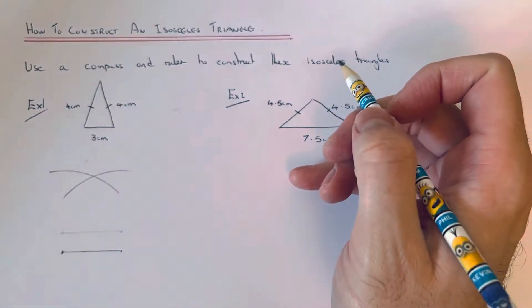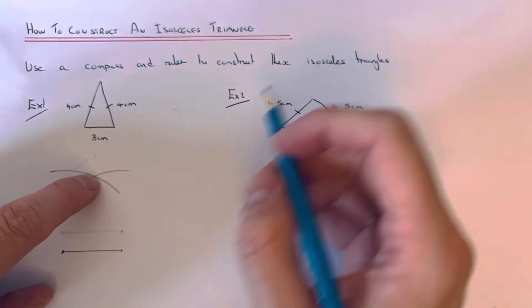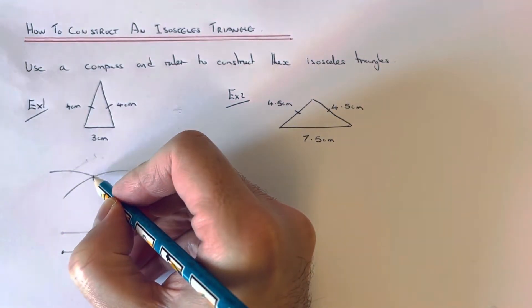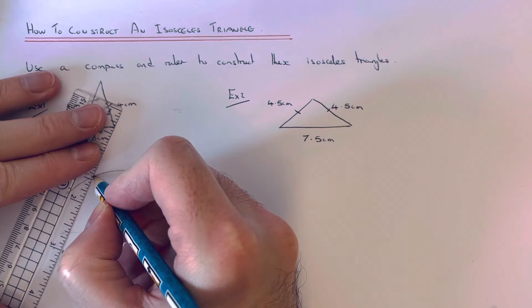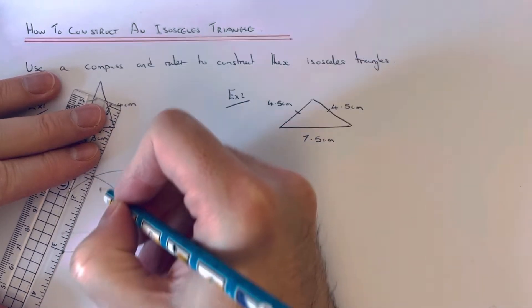Your two arcs will need to intersect. Join that intersection point to the two ends of our line.